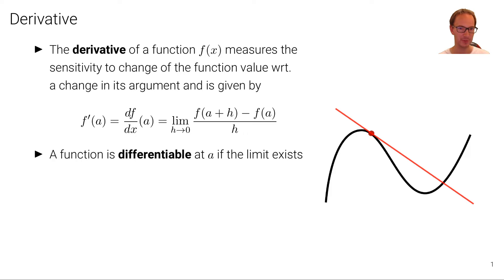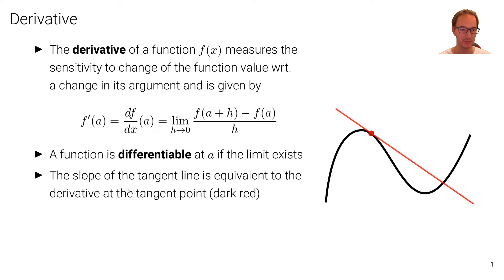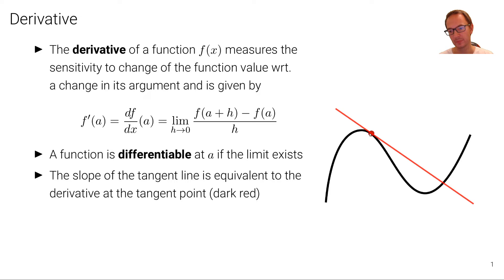A function is differentiable if the limit exists; in particular, it's differentiable at a if the limit exists at a. The slope of the tangent line — here an example from Wikipedia — is equivalent to the derivative at the tangent point shown in dark red. This tangent line slope is equivalent to the derivative at the point where the tangent touches the function f shown in red.